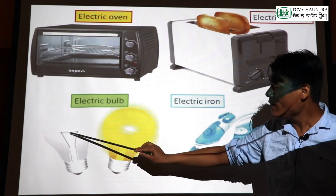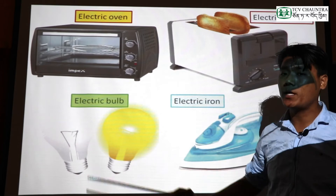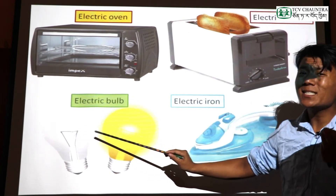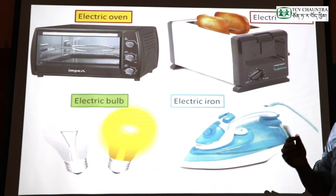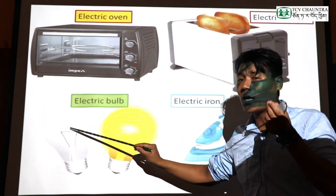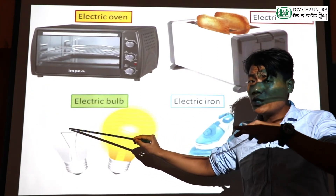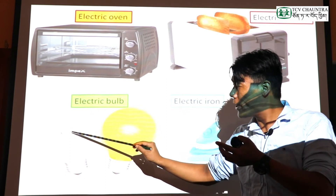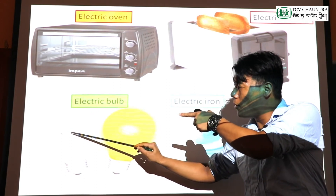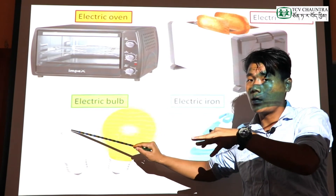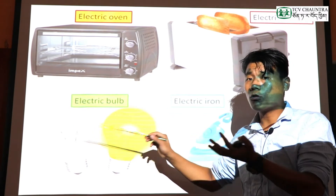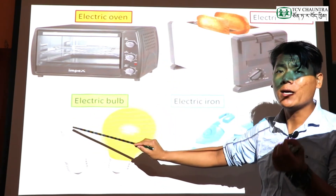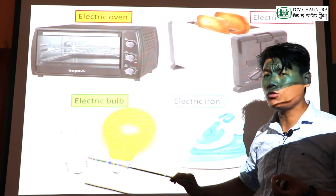Why are filaments made up of tungsten? It's called tungsten because tungsten has a high melting point. Melting point is very important. Tungsten also has very high resistivity in nature, as well as high resistance.